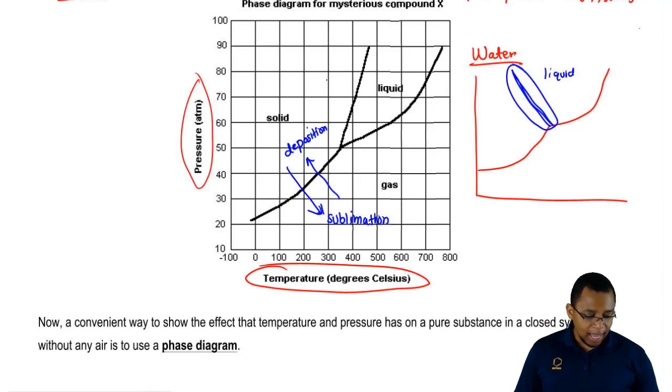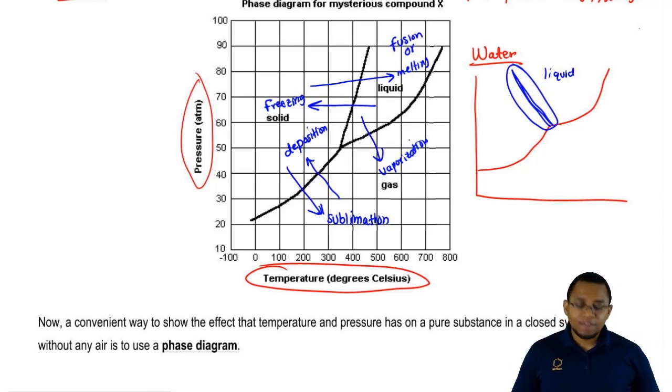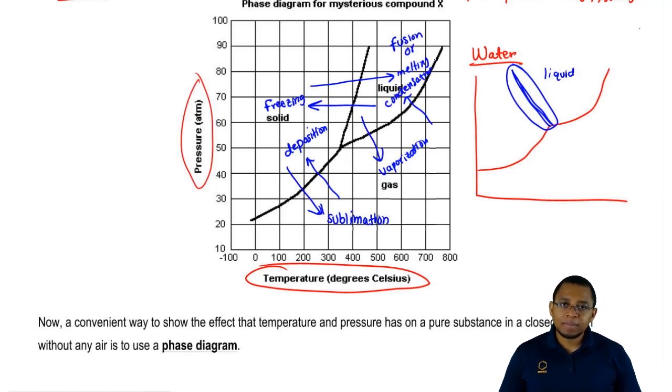If we're going from a solid to a liquid, then that is melting or what we call fusion. Remember, fusion or melting mean the same thing. If we're going from liquid to solid, that's freezing. If we're going from liquid to gas, that's vaporization. If we're going from gas to liquid, that's condensation. We should know all of these different types of phase changes.